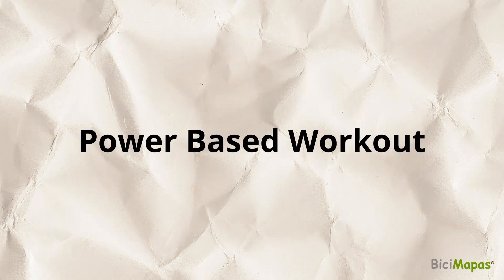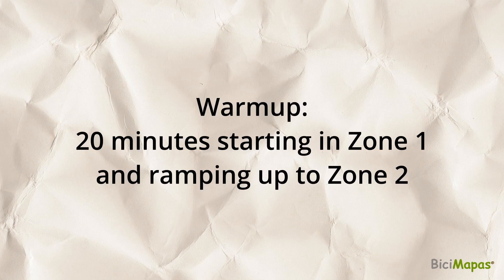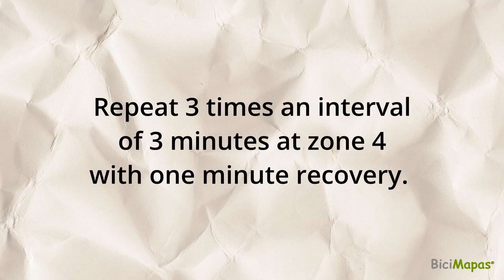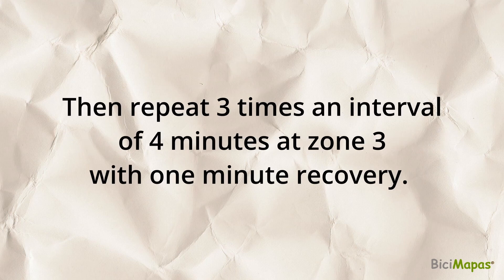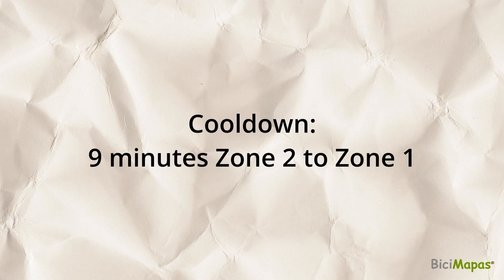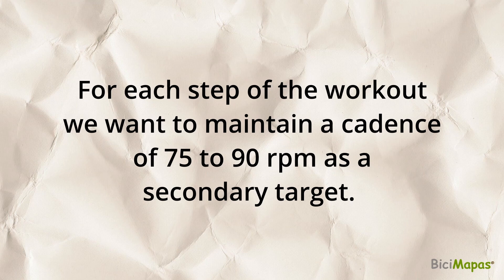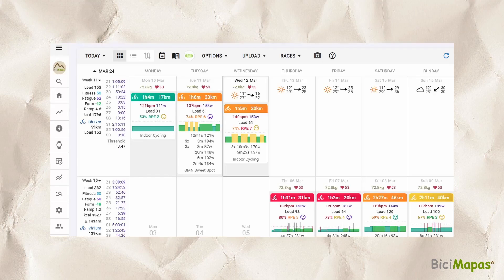The workout we will create in this video is based on power as follows. Warm up: 20 minutes starting in zone 1 and ramping up to zone 2. Repeat 3 times: an interval of 3 minutes at zone 4 with 1 minute recovery, followed by 4 minutes at zone 2. Then repeat 3 times: an interval of 4 minutes at zone 3 with 1 minute recovery. Cool down: 9 minutes zone 2 to zone 1. For each step we want to maintain a cadence of 75–90 RPM as a secondary target.